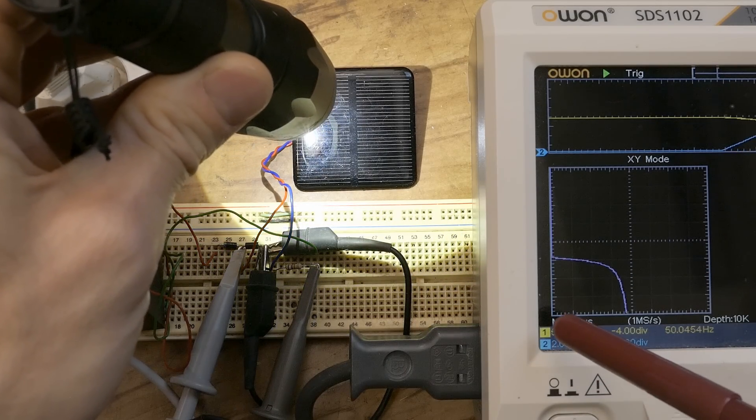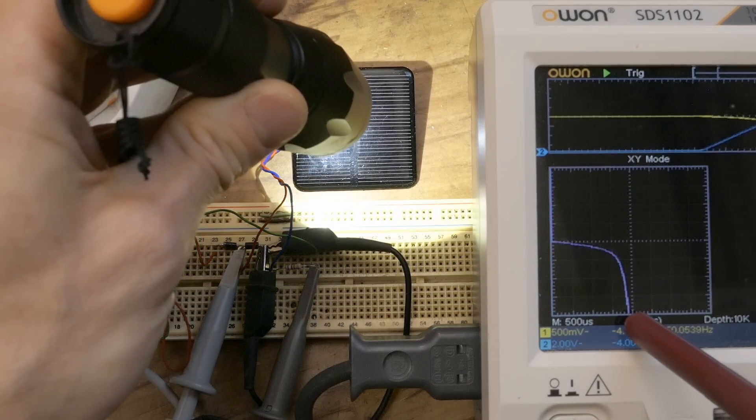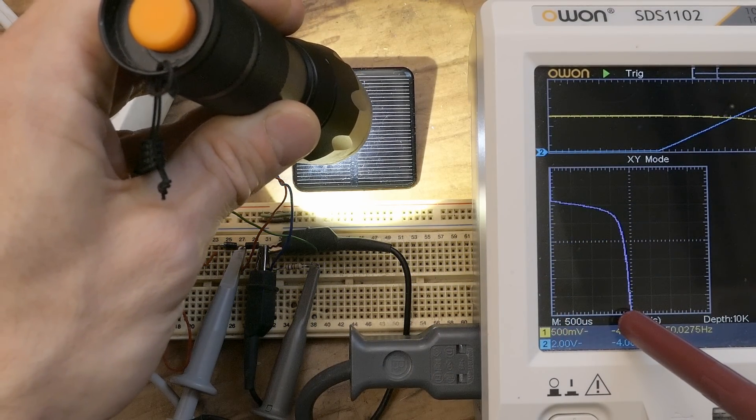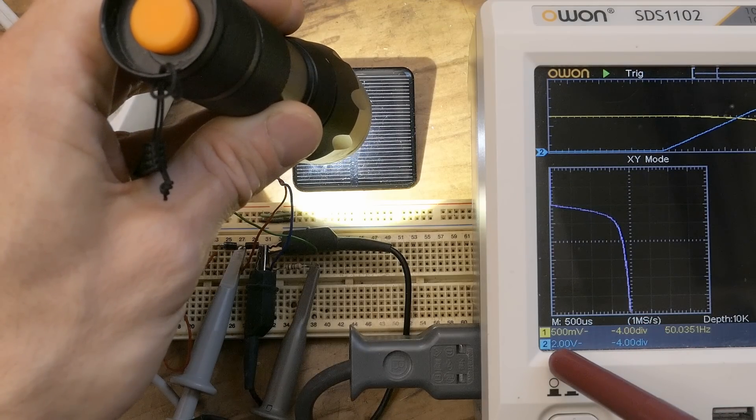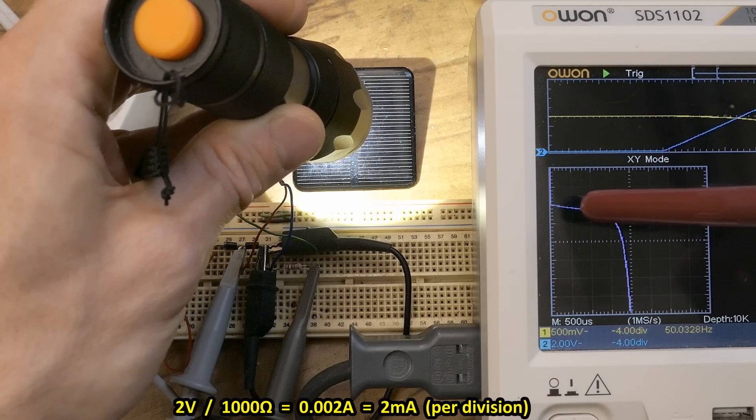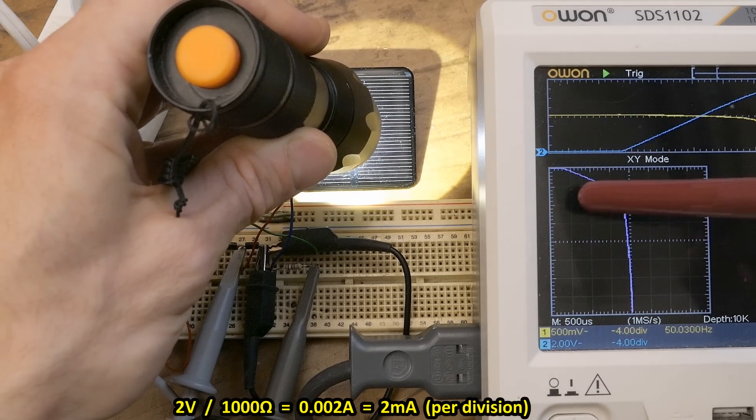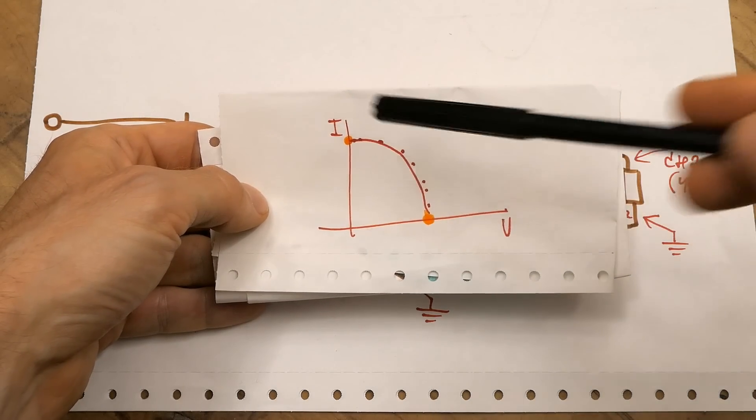And the voltage is 500mV per division, so it's 2V here. And the current is, because it's 2V per division with 1kΩ resistor, 2mA per division. So this was the voltage versus the current.